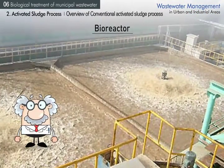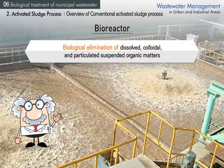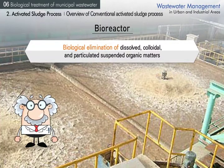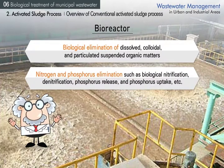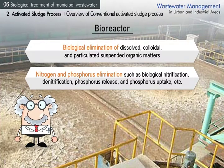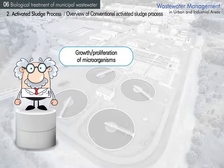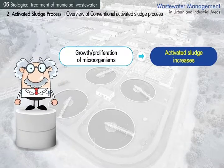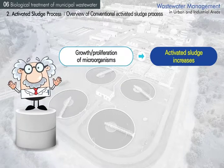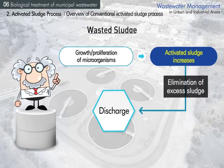In the bioreactor of the activated sludge process, dissolved, colloidal, and particulate suspended organic matters are biologically eliminated. Depending on operating conditions and reaction processes, nitrogen and phosphorus can also be eliminated through nitrification, denitrification, phosphorus release and uptake. While wastewater pollutants are treated, microorganisms grow and proliferate, gradually increasing the amount of activated sludge. To maintain a certain concentration in the bioreactor, excess sludge is eliminated and discharged outside the system as wasted sludge.